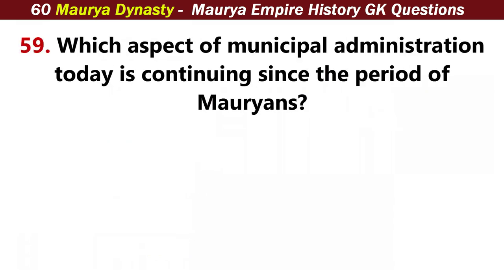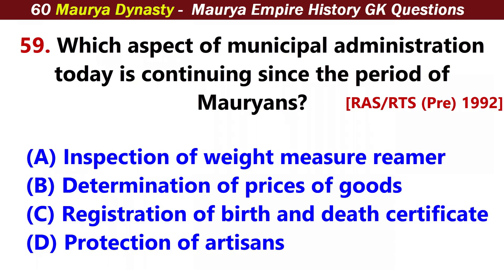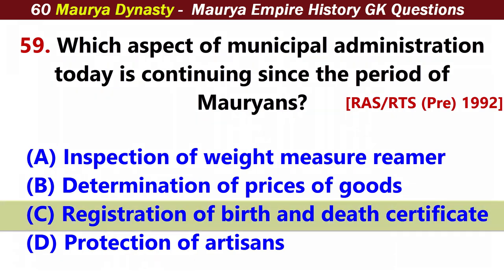Which aspect of municipal administration today has continued since the period of the Mauryas? Answer C: Registration of birth and death certificates.